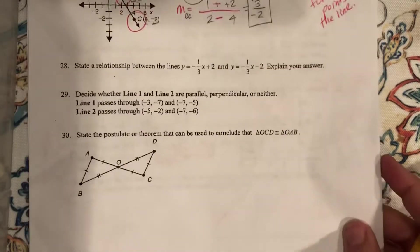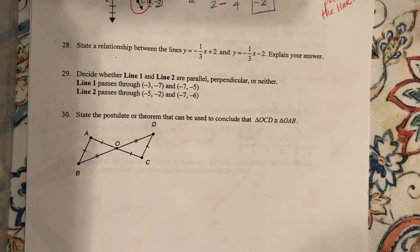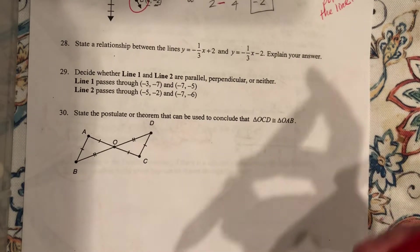Okay. So it works. Number 28, state the relationship between the lines. Well, we're going to look at the slope.